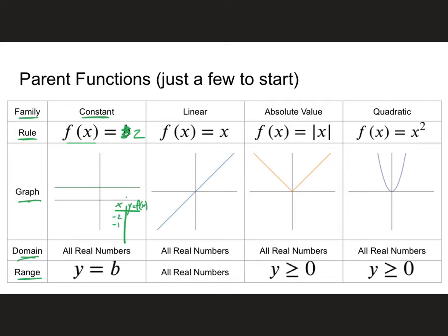So my f of x is always equal to two. That means no matter what the x value is, the y value is always two. Going from negative two to positive two: if x is negative two, I get the coordinate pair negative two, two. Then negative one, two; zero, two; one, two; two, two. So what x values work? All real numbers. But the range is only the y value we selected — two — or whatever number you start with.